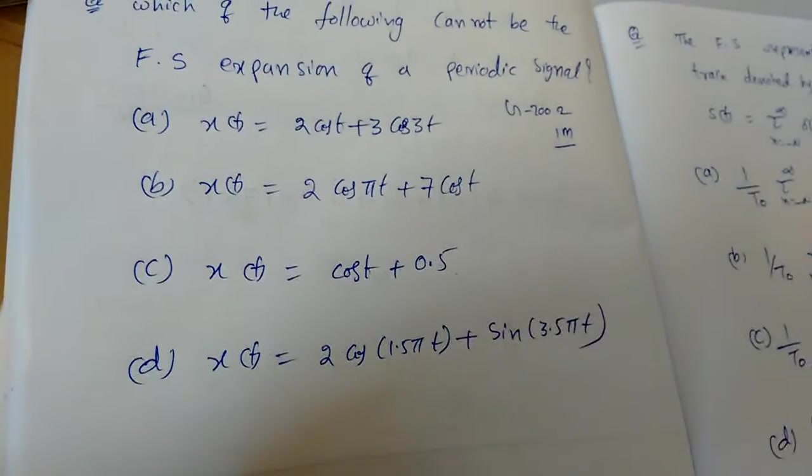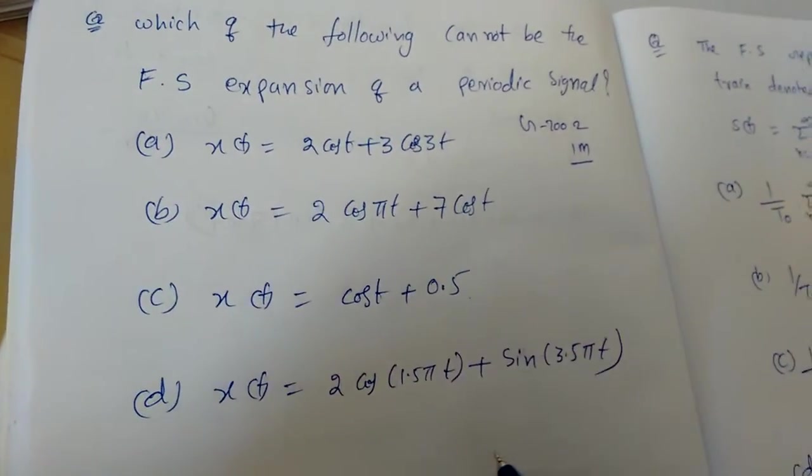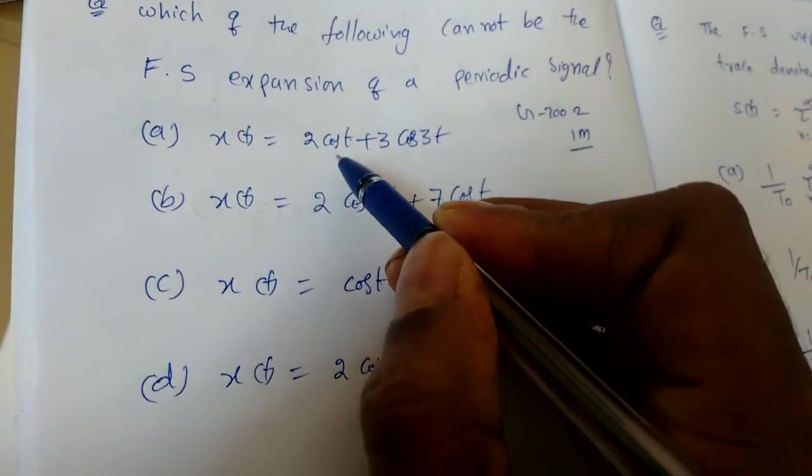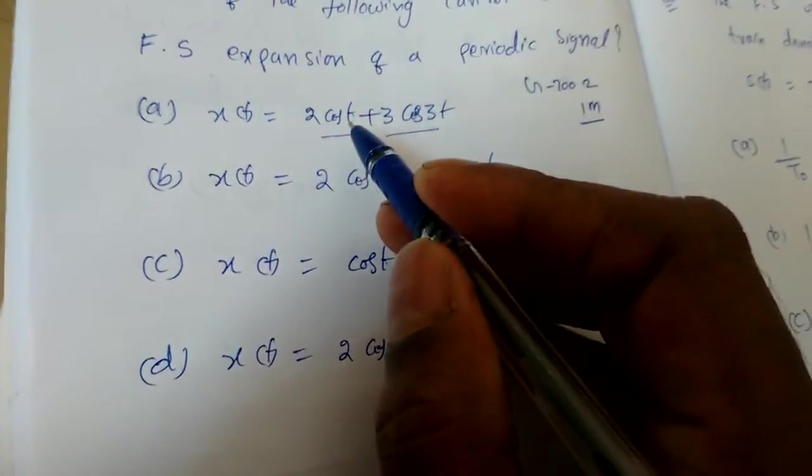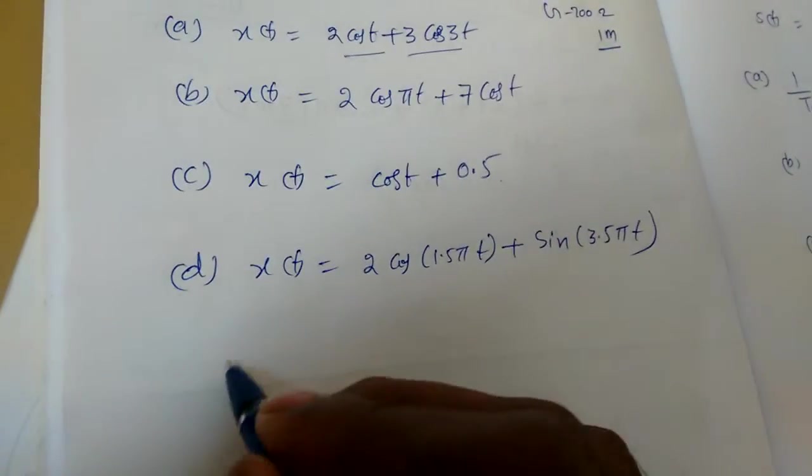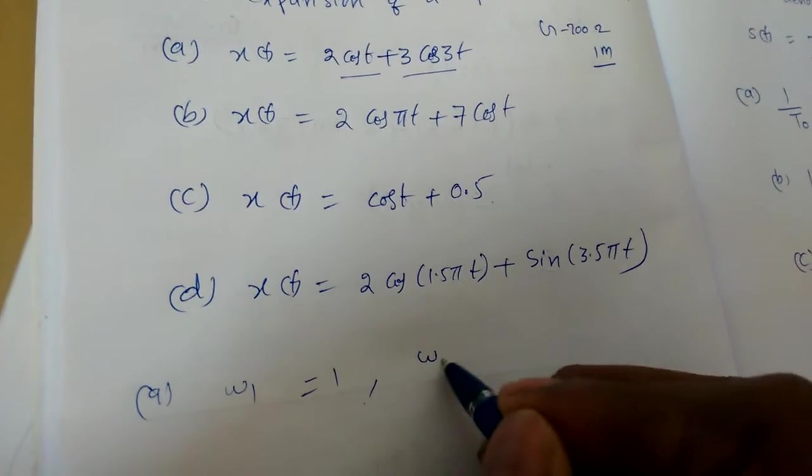We know the Dirichlet conditions - first one is x of t should be periodic. So first that we will have to decide. Now if I see 2 cos t plus 3 cos 3t, it is not containing any pi term, so omega 1 for a is 1, omega 2 is 3.